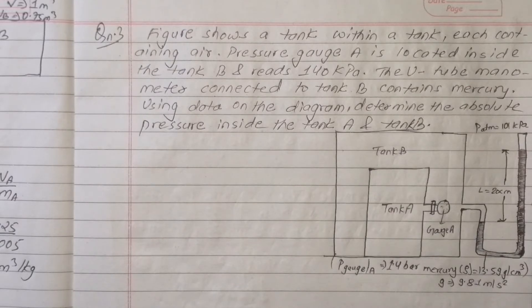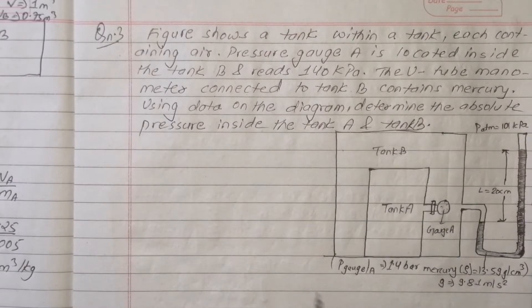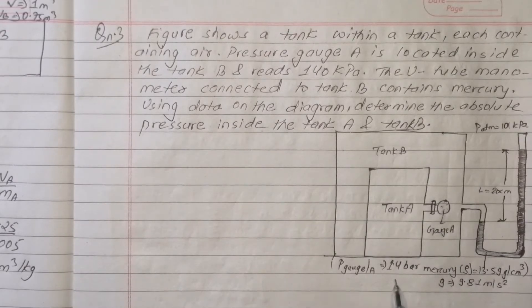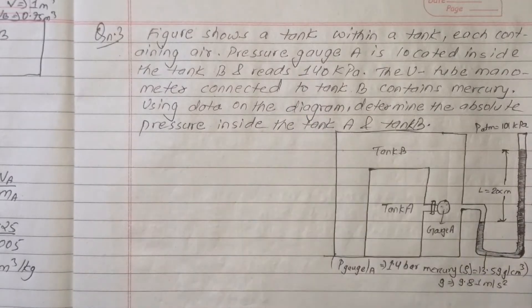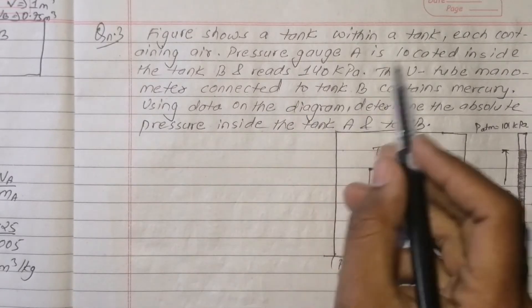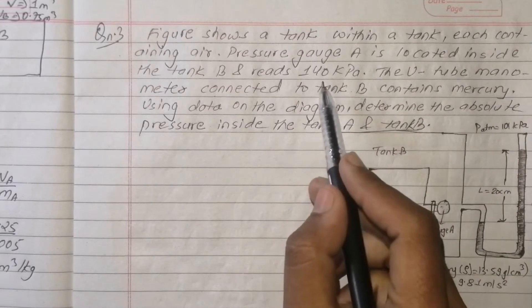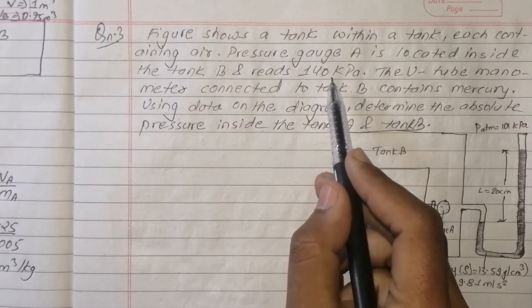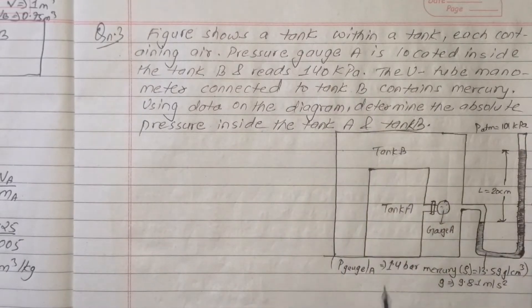The pressure gauge of A is located inside tank B and reads 140 kPa. This is equivalent to 1.4 bar.